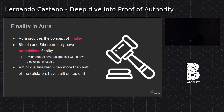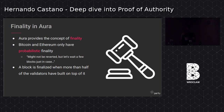Another thing that Aura provides is finality. Finality means that once a block has been finalized, it can't be reverted at all. In Bitcoin and Ethereum we have a similar concept but it's not as strong — exchanges wait for a certain number of block confirmations to ensure a transaction won't get reverted due to a fork. But in Aura, after a certain number of blocks are built, that block gets finalized with a very strong guarantee it'll never be changed.